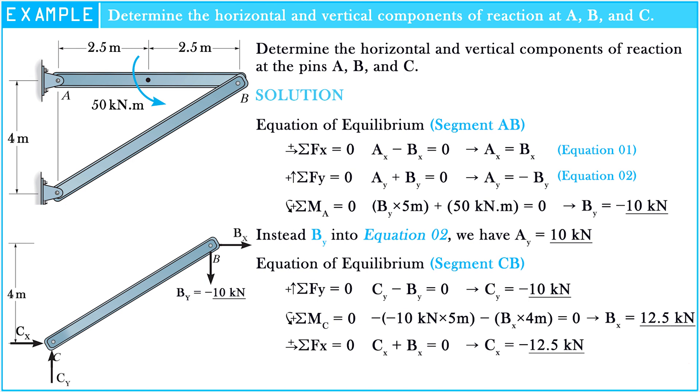As we know the Bx value, we can substitute Bx into equation 1 directly. We have Ax equals 12.5 kilonewtons. Here is the way that we compute the horizontal and vertical components of reaction at pins A, B, and C.